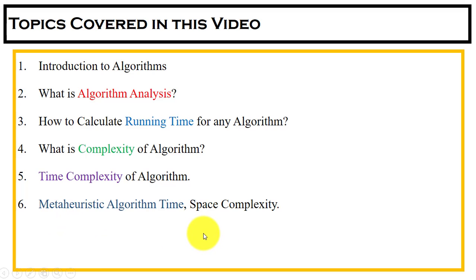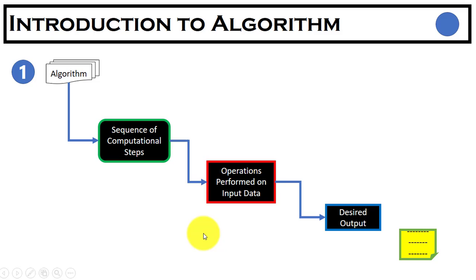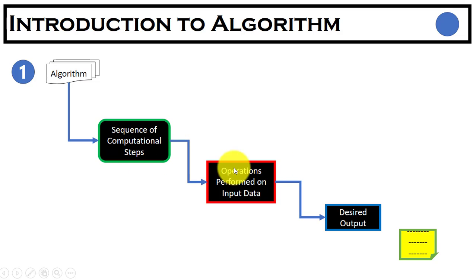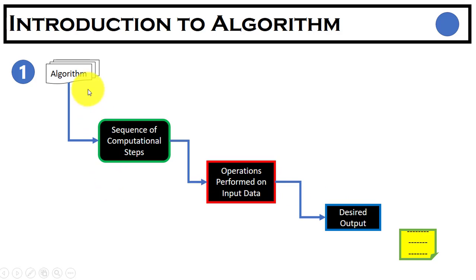We will learn how we can find out time and space complexity for any meta-heuristic algorithm. The most popular definition for an algorithm is that it is a step-by-step procedure to solve any specific problem. An algorithm is just a sequence of computational steps with certain operations performed on the input data to get the desired output.